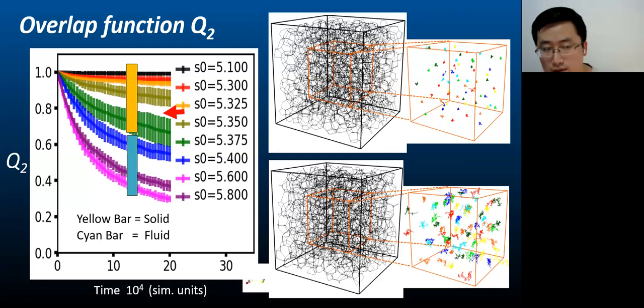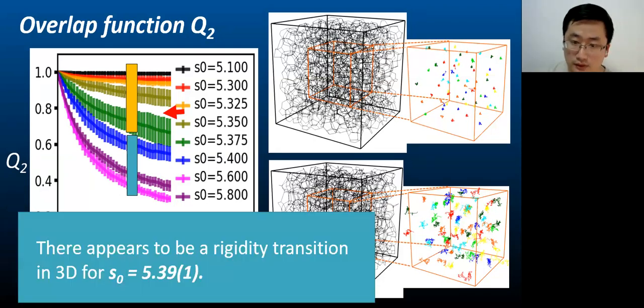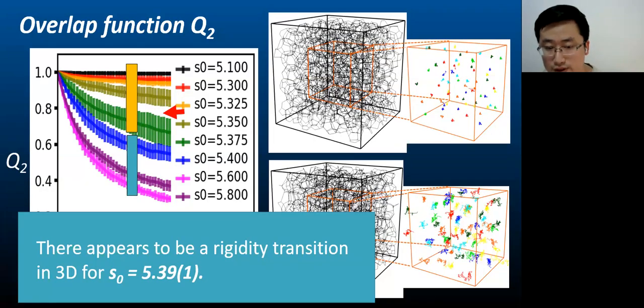However, for high value S naught equals to 5.8, it is clear that qn is decaying to a value less than 1. The overlap function can be fit to an exponential decay with a decay time approaching zero around S naught equals to 5.39, which is our estimate for the rigidity transition point.